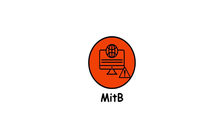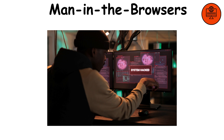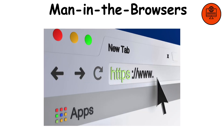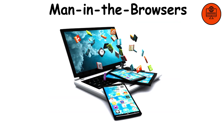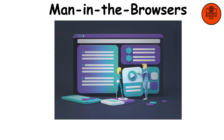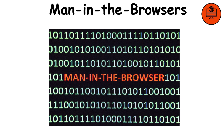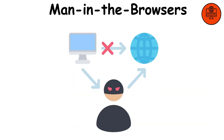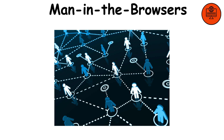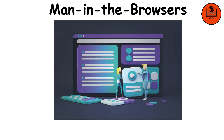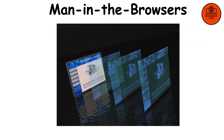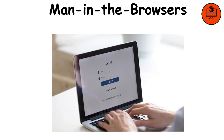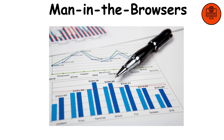During a man-in-the-browser (MITB) attack, malicious software infects a user's web browser, enabling hackers to intercept and alter data transmitted between the user and websites. MITB attacks target the browser explicitly, as opposed to standard man-in-the-middle attacks that happen at the network level. This gives attackers the ability to modify transactions, insert malicious code into web pages, or steal private data, including login passwords and financial information.